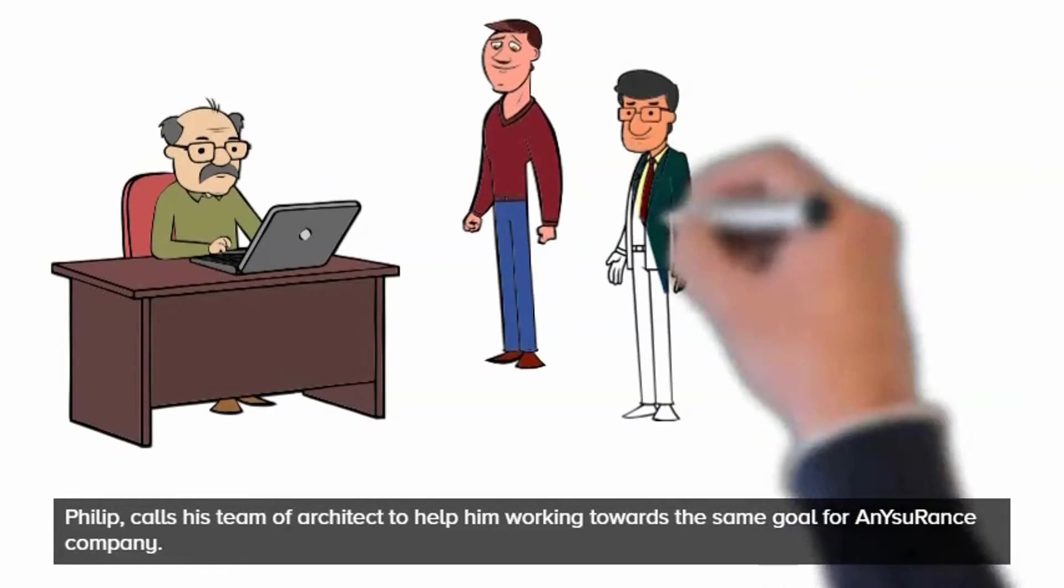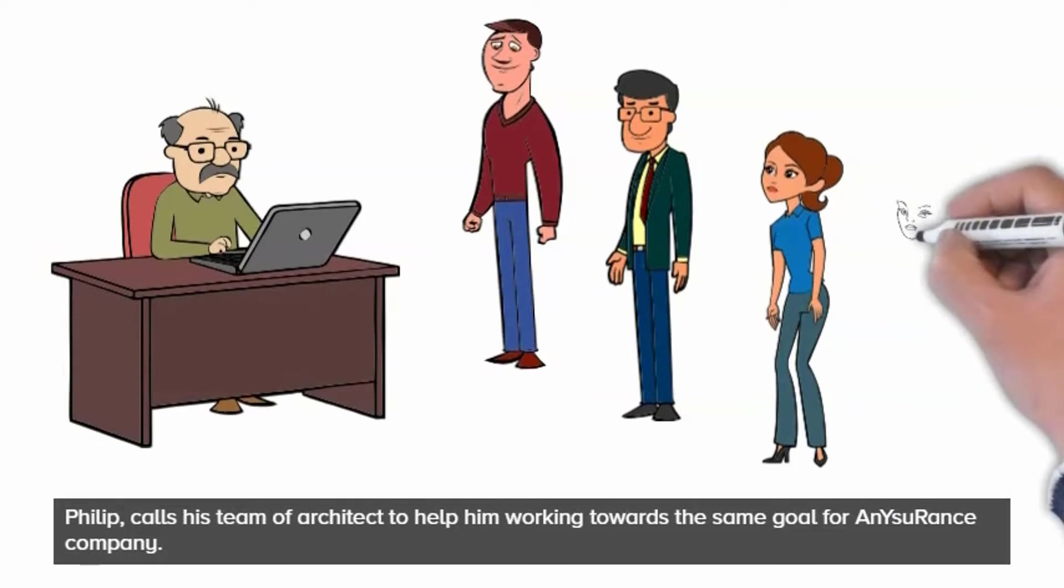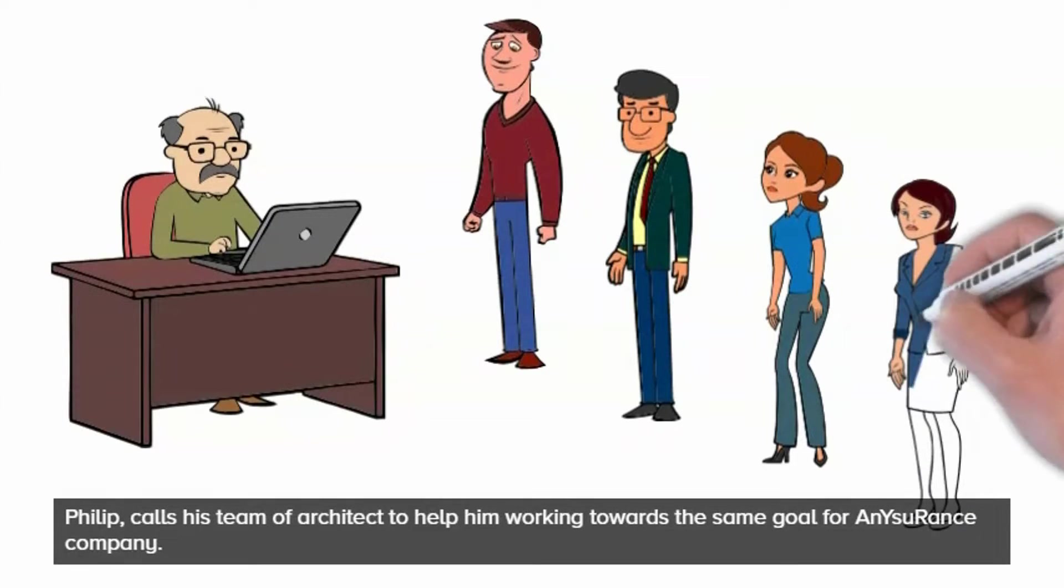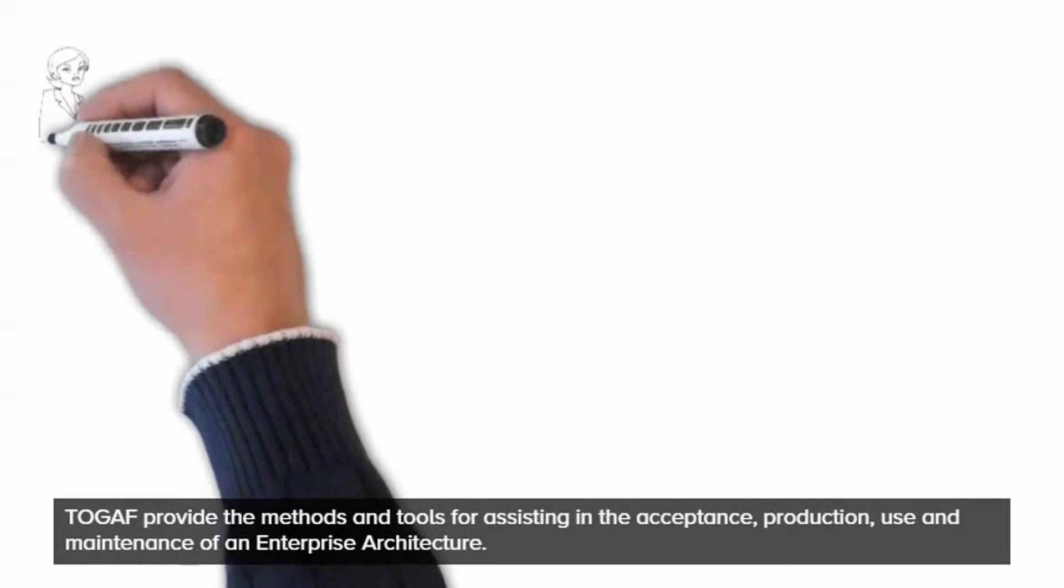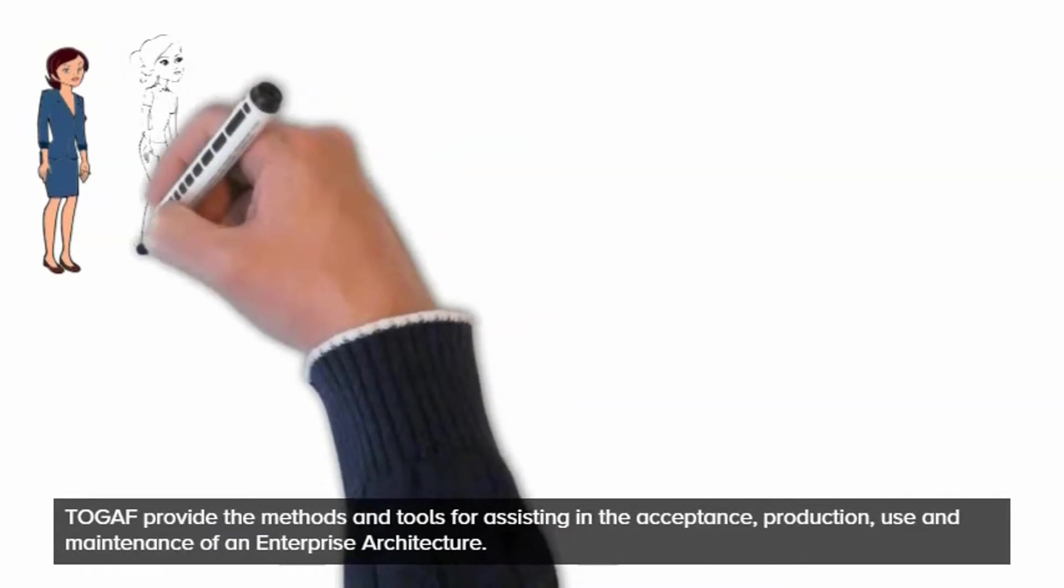Philip calls his team of architects to help him working towards the same goal for Any Insurance company. Steve, David, Amanda and Jane are the architects who will be assigned work in four domains of architecture in TOGAF terms: business, data, application and technology as per their capabilities. However, all four are new to TOGAF and Philip will guide them how to go about it.